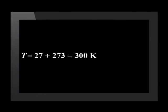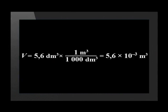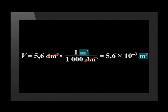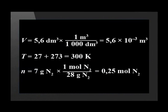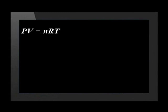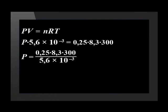It is easy to convert to Kelvin — we simply add 273. There are 1000 decimeters cubed in 1 meter cubed. Notice how these units cancel and leave meters cubed in our answer. Now we are ready to substitute these values into the general gas equation: PV = nRT. We make P the subject of the equation and solve. We know the answer's unit is Pascals because that is the SI unit for pressure.